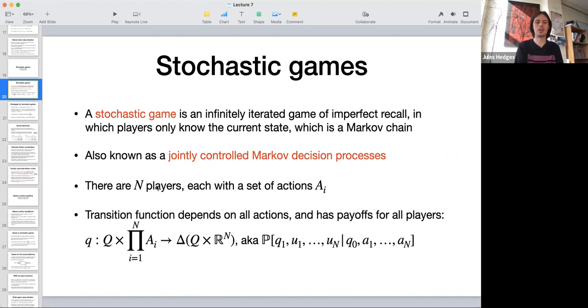The transition function of the Markov chain is going to depend on the actions of all of the players, and it's going to give you back a joint distribution on the new state and also payoffs for all players.